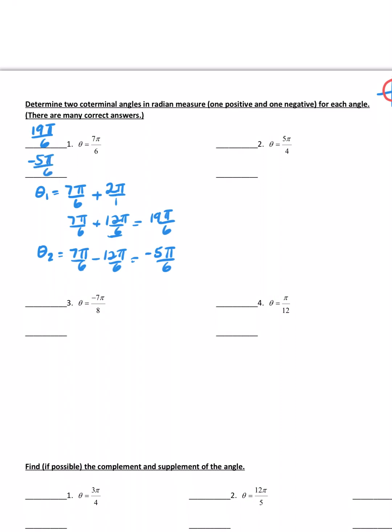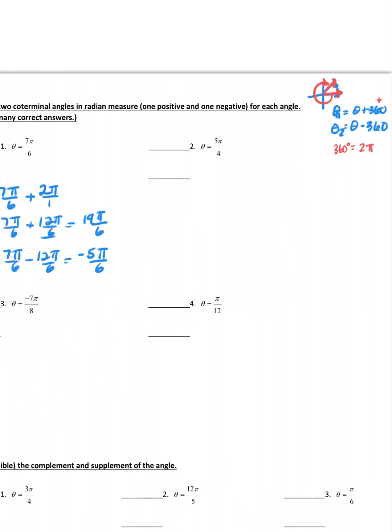Now I'm going to use this conversion factor when I do my subtracting. 7π over 6 minus 12π over 6 gives me a negative coterminal of negative 5π over 6. Let's look at number 2, 5π over 4. So first coterminal plus 2π, so a common denominator is going to have to be 4, so it's going to be 8π. And when we add those, we get 13π over 4. So the second coterminal, I'm going to do 5π over 4 minus 8π over 4, which gives me negative 3π over 4.